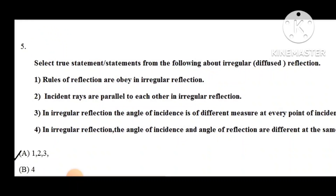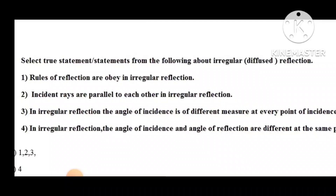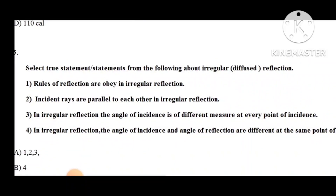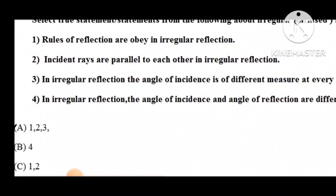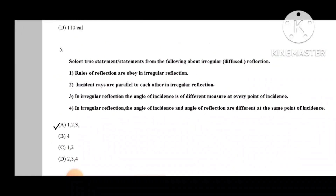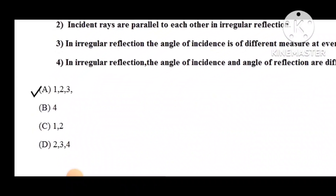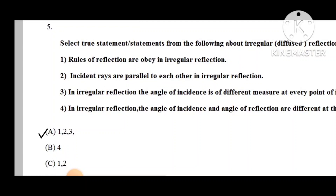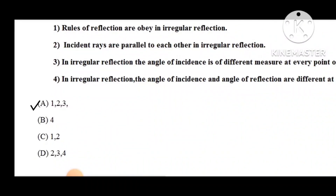Question number 5: Select two statements from the following about irregular reflection. First: rules of reflection are obeyed in irregular reflection. Second: incident rays are parallel to each other in irregular reflection. Third: in irregular reflection the angle of incidence is of different measure at every point of incidence. Fourth: in irregular reflection the angle of incidence and angle of reflection are different at the same point of incidence. The correct statements are 1, 2, and 3.